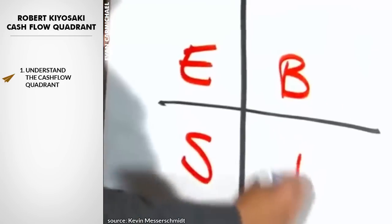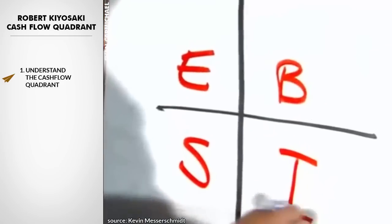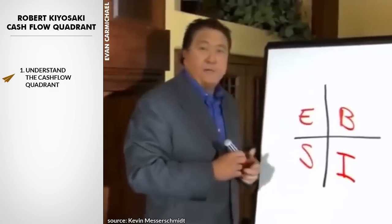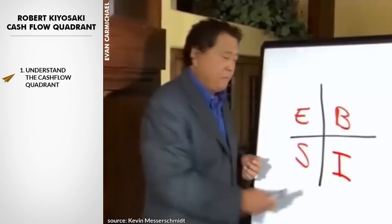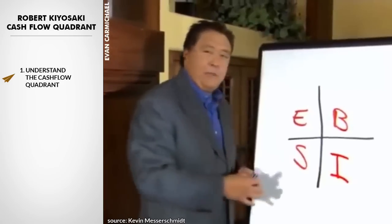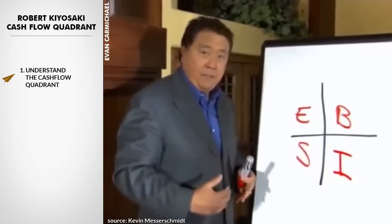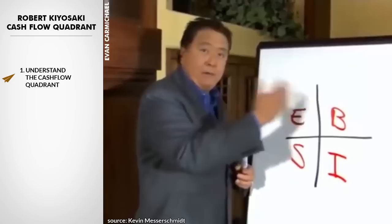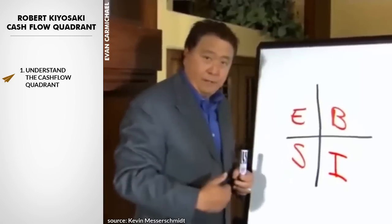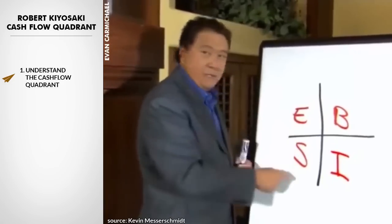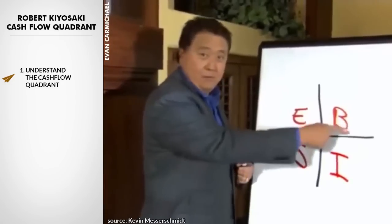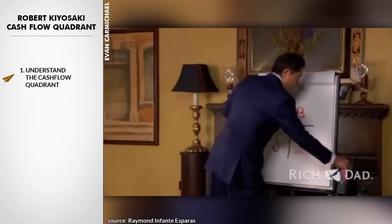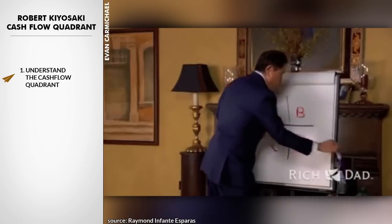The fourth quadrant is the I, and I stands for investor. These are people who have money work hard for them. These are people who have people work hard for them — and these are the people that work hard for the rich.